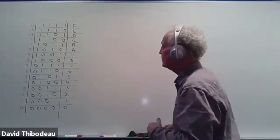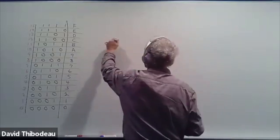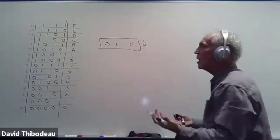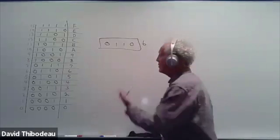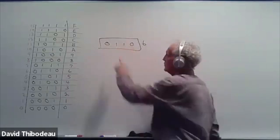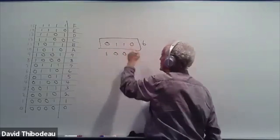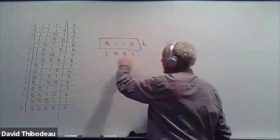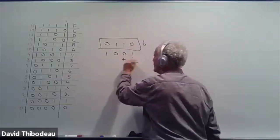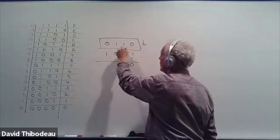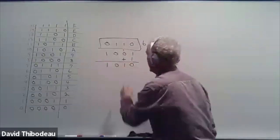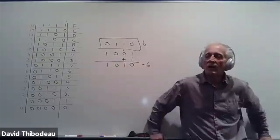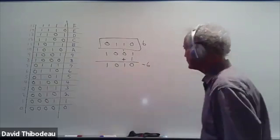Let's pick the number six. Six is zero, one, one, zero. To do two's complement, we first take the complement — also called the one's complement. The complement means you just invert every digit: if it's a zero it becomes a one, if it's a one it becomes a zero. That gives us one, zero, zero, one. That's easy to do in circuitry. Then you add one to it. One plus one is zero, carry the one; one and zero is one. So we get zero, one, one, zero — wait, that comes out to one, zero, one, zero. This is minus six — the two's complement of six.